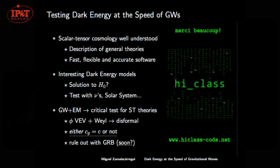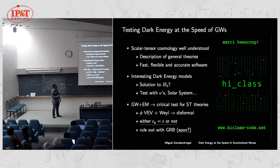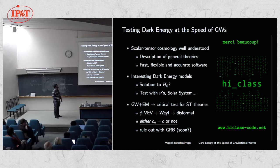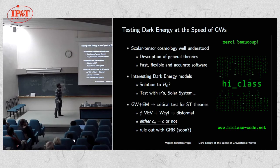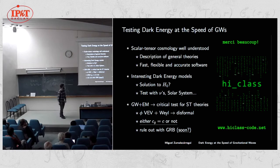In conclusion: scalar-tensor cosmology is very well understood; we have a very general description of the theories and flexible, accurate software to obtain predictions. Hopefully there are interesting dark energy models — if tensions persist, it will certainly be worth looking at these as possible solutions, not only early-universe solutions. Any of these models can be tested in many regimes: neutrino masses for Galileons, solar system scales, smaller scales, and most critically, gravitational waves, which will be the most decisive test for ruling out these theories.